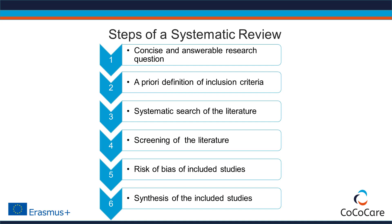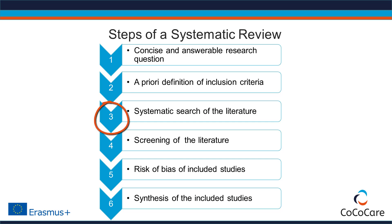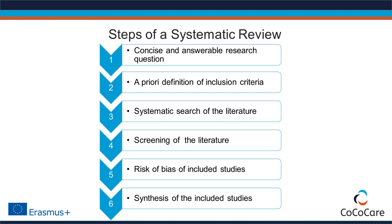Systematic reviews have a highly standardized methodological design. Any systematic review starts with a concise and answerable research question. The second step is a priori definition of inclusion criteria. The third step is a systematic search of the scientific literature. The fourth step involves two investigators independently screening each record. The fifth step is a critical appraisal to determine the risk of bias. The final step is synthesis of included studies, including a rating of the certainty of evidence. Let's have a closer look at each of these steps.